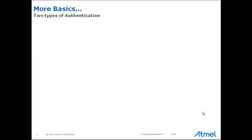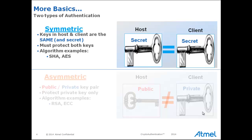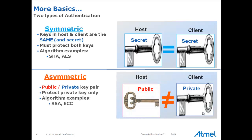There are two basic types of authentication: symmetric and asymmetric. If the secret key is shared on both sides, it is symmetric. If the keys are different on each side, then it is asymmetric. The keys in the asymmetric case will be mathematically related, with one being the public key and the other private. Only the private key needs to be protected.